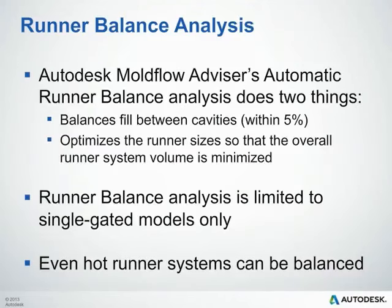Now we'll talk about the runner balance analysis. Running this tool will basically try to achieve two things: it's going to try to balance your fill between the cavities within 5% variation, and it's also going to optimize the runner sizes so that the overall runner system volume is minimized. However, the runner balance analysis is limited to single-gate models — if you have parts with multiple gates on them, you cannot use this. One gate per part for this application. You can also balance hot runner systems if you wish.